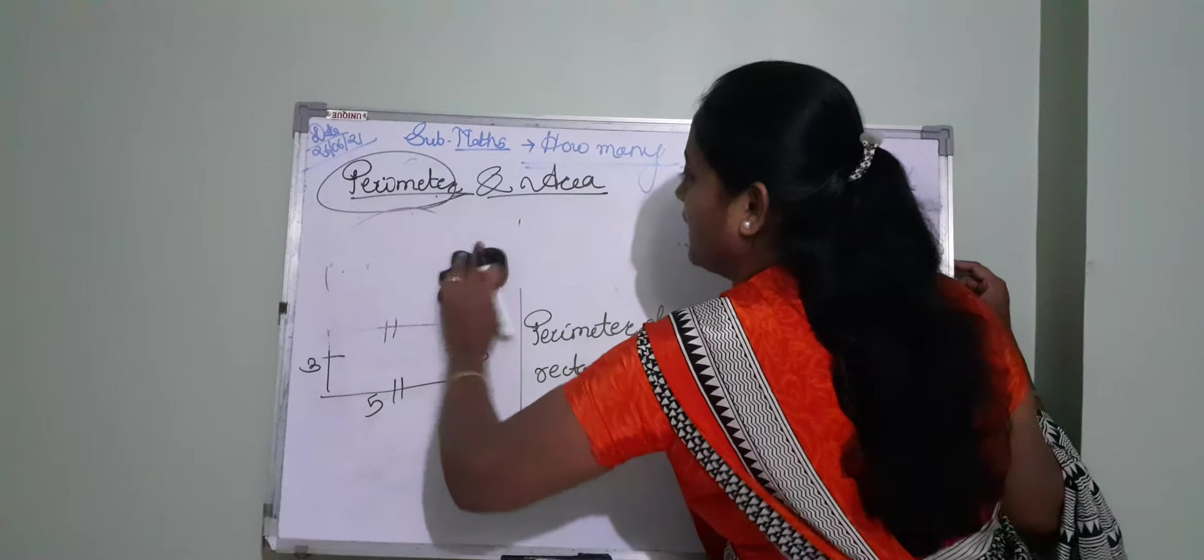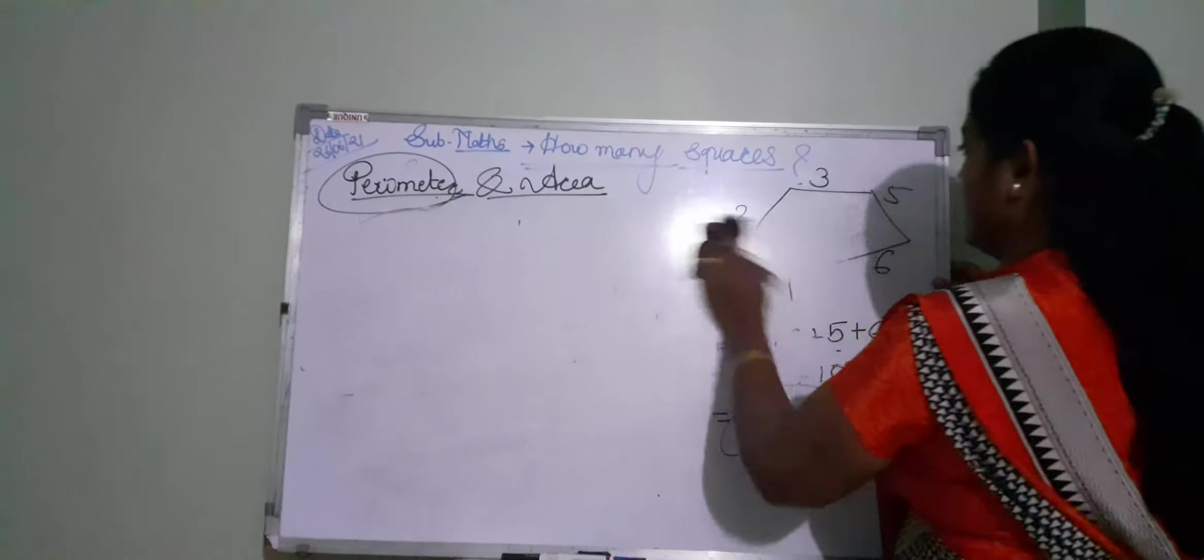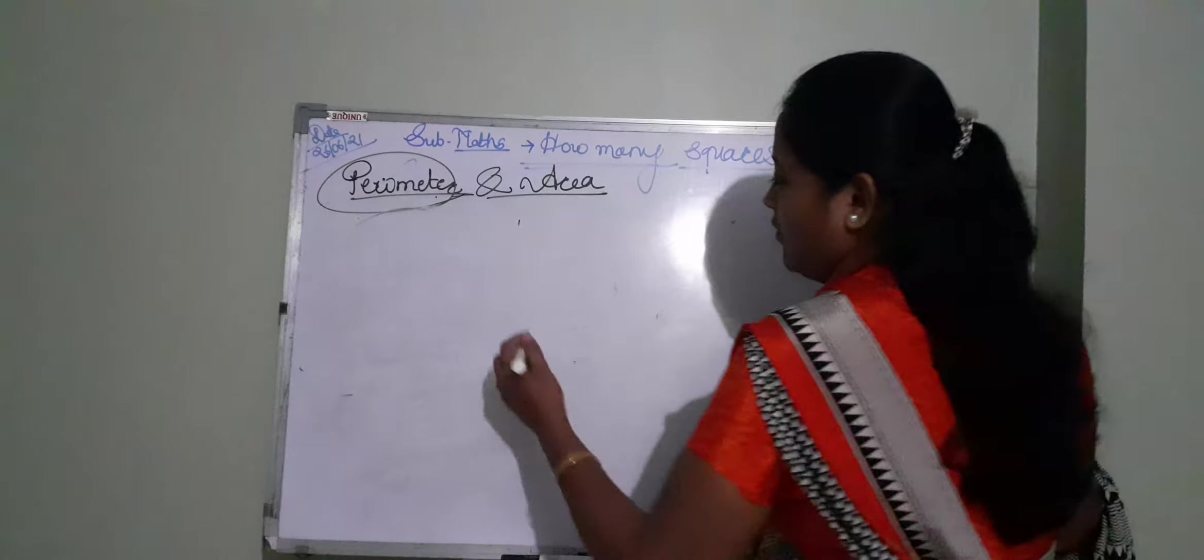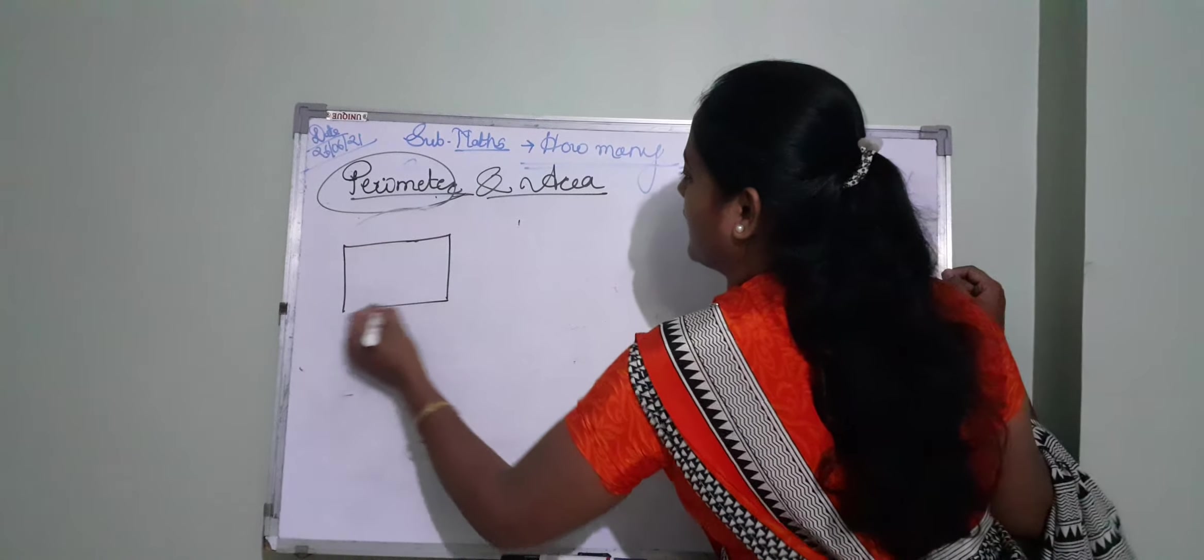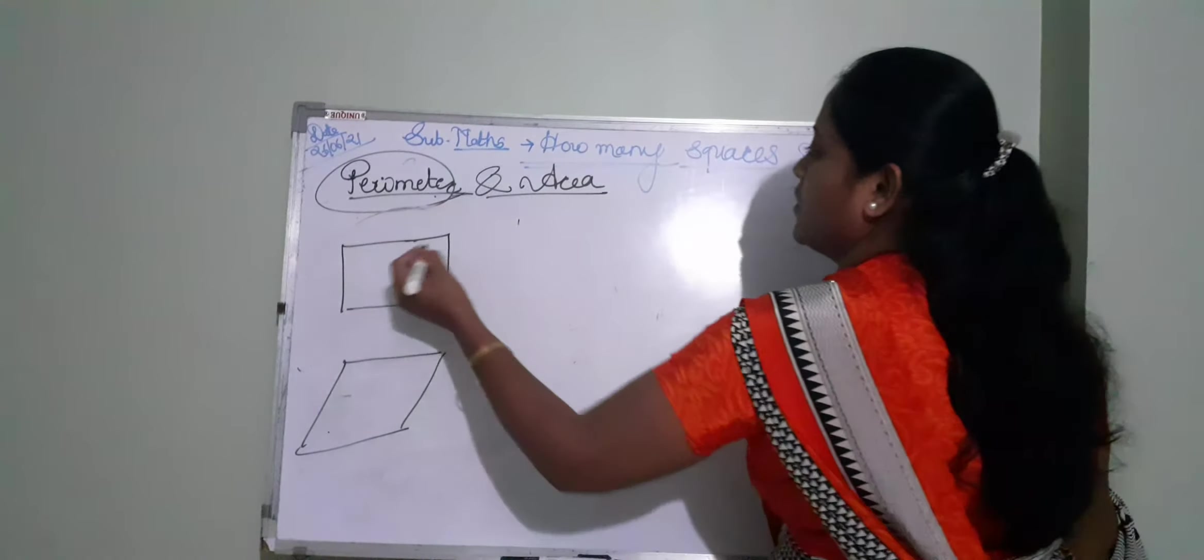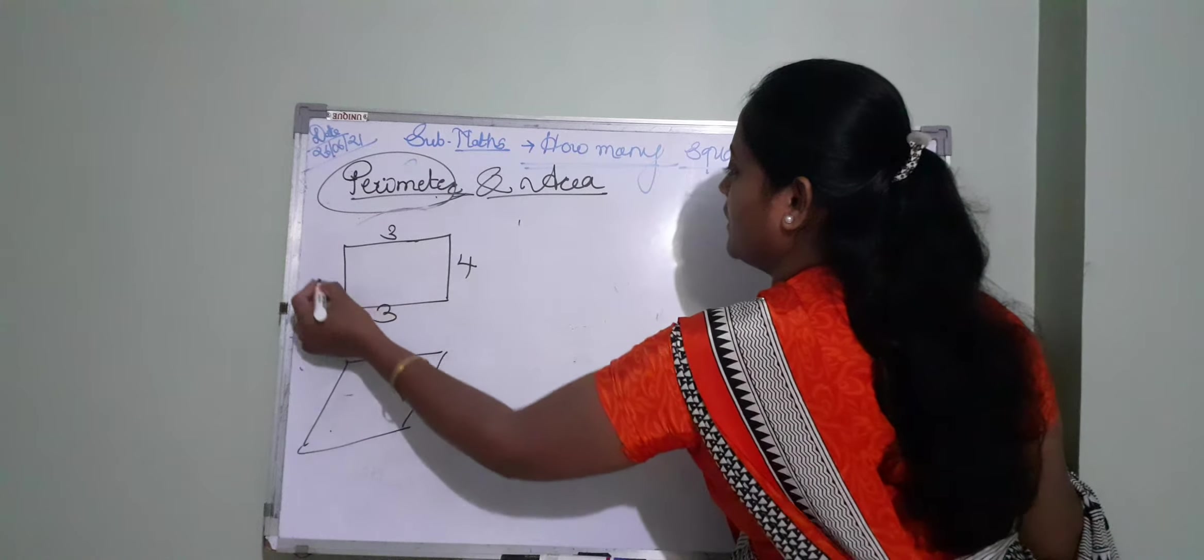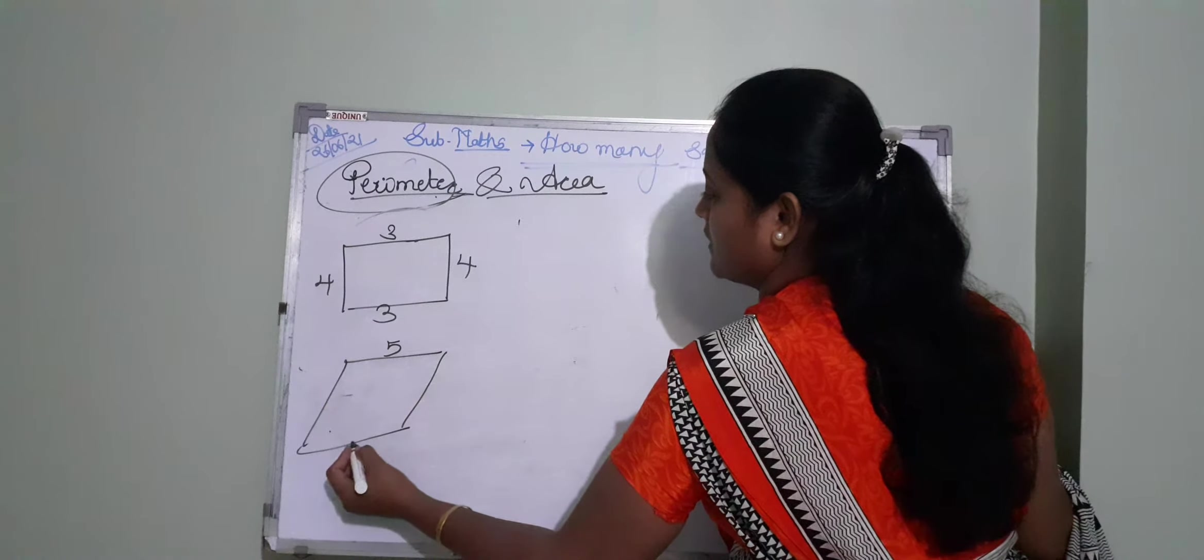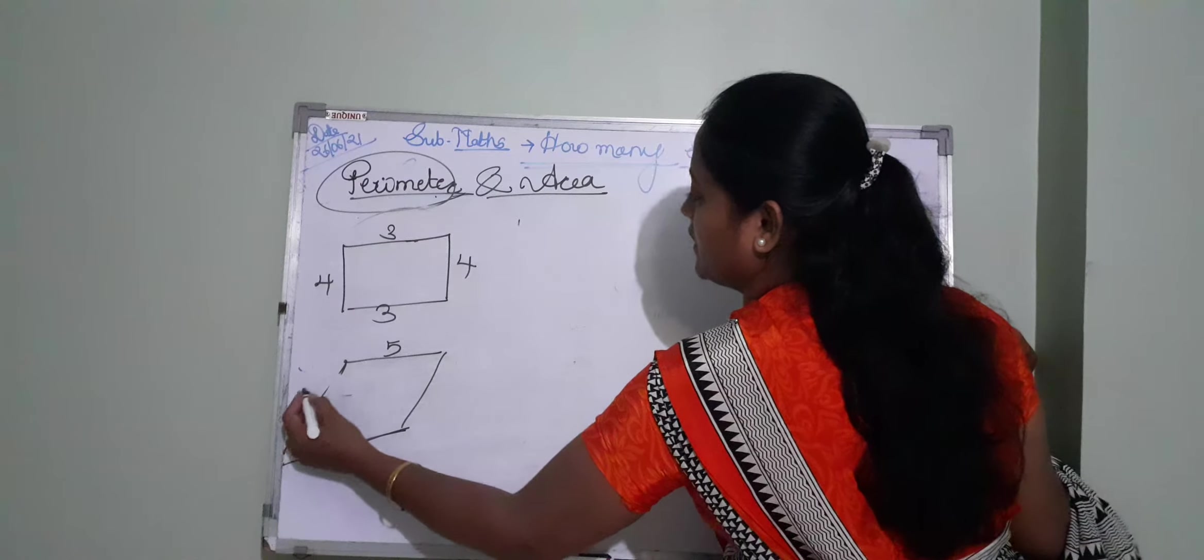Then, from that only you have to agree. Look at the board. It is a rectangle. It is a parallelogram. Okay, it's 3, 4, 3, 4, it's 5, 3, 2.